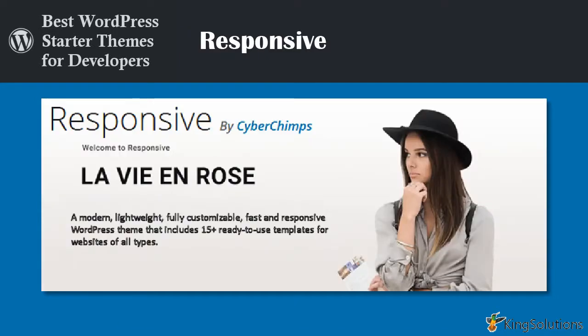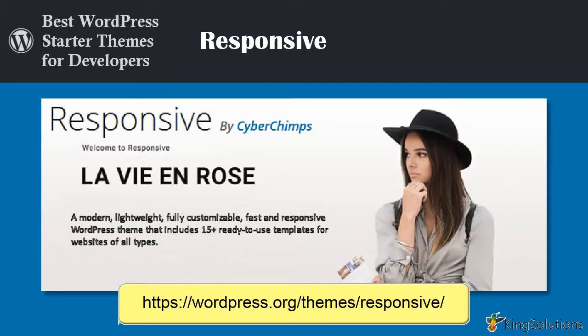Responsive is a WordPress theme created by Cyberchimps that has been downloaded over 40,000 times. It is a modern, lightweight, fully customizable, fast, and responsive WordPress theme that includes 15-plus ready-to-use templates for websites of all types. Responsive is fully compatible with the Gutenberg editor and most WordPress plugins, including WooCommerce, Sensei, BBPress, and top page builders like Elementor. It comes with 9 page templates, 4 menu positions, 11 widget areas, and a fluid grid system that adapts to screen sizes.